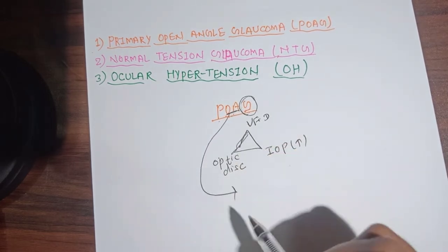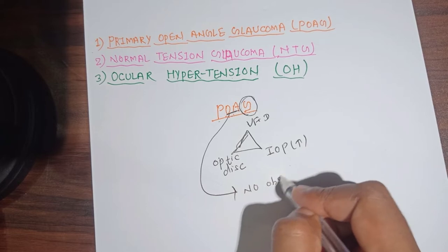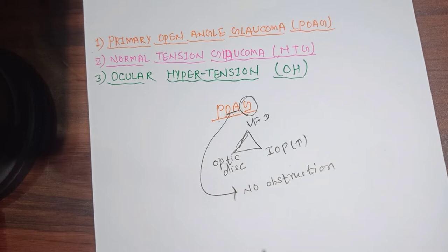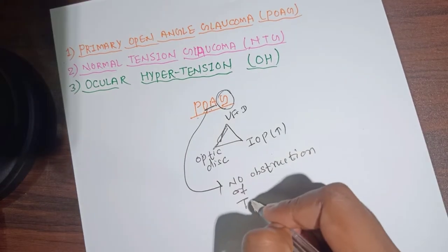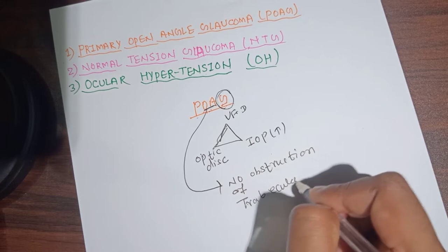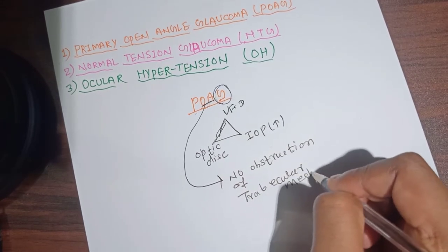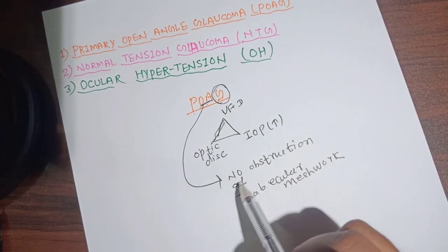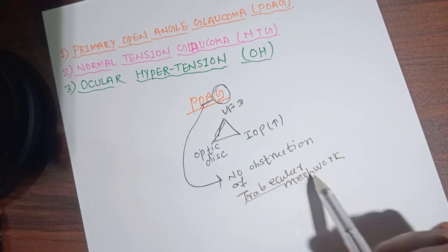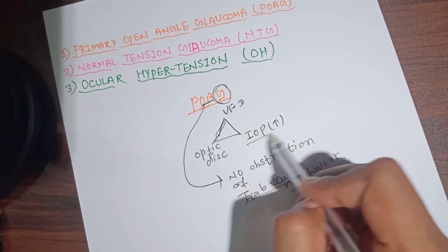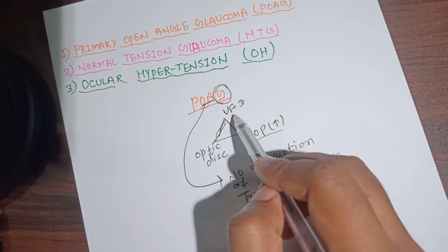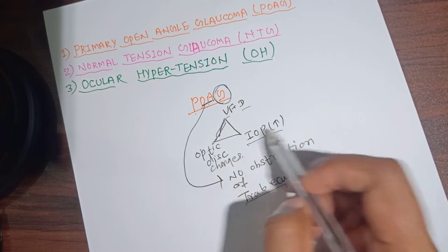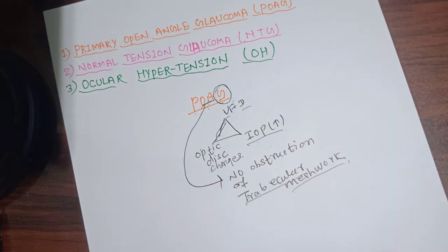Open angle means there is no obstruction of the trabecular meshwork. So there is no obstruction of the trabecular meshwork, yet there is an increase in intraocular pressure, visual field defect, and optic disc changes — these three are the triad of POAG.